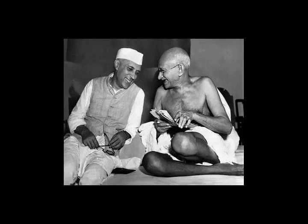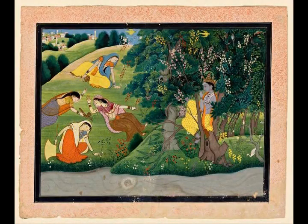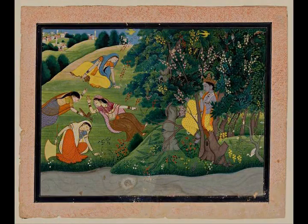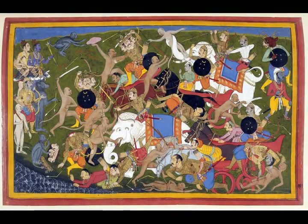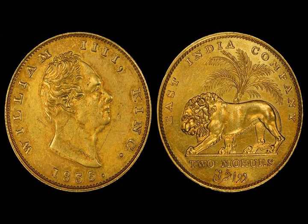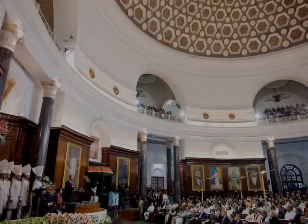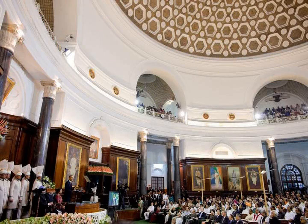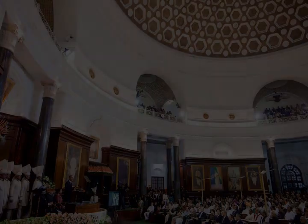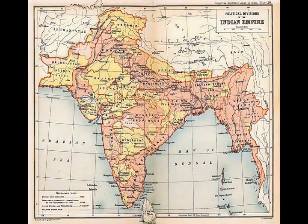India is a megadiverse country, a term employed for 17 countries which display high biological diversity and contain many species exclusively indigenous, or endemic, to them. India is a habitat for 8.6% of all mammal species, 13.7% of bird species, 7.9% of reptile species, 6% of amphibian species, 12.2% of fish species, and 6.0% of all flowering plant species. Fully a third of Indian plant species are endemic. India also contains four of the world's 34 biodiversity hotspots. According to official statistics, India's forest cover is 713,789 square kilometers, which is 21.71% of the country's total land area.